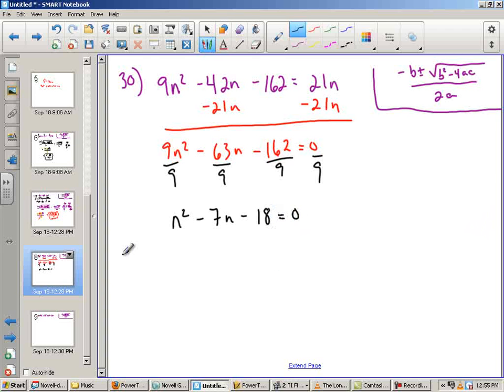I could use the quadratic formula here or I could try to set up the parentheses. Parentheses will be a little bit easier or quicker if it works out. I look at my signs. This tells me they are different, so plus, minus. Factors of 18 that have a difference of 7 are 9 and 2. But I need to have a negative 7, so the bigger number has to be negative. So negative 9, positive 2.